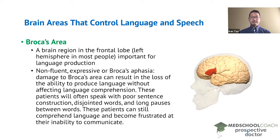In individuals that have damage to Broca's area, they may have what is called non-fluent expressive, or Broca's aphasia. Because they have damage to a brain region important for language production, these patients are unable to produce language that is comprehensible. When they try to speak, they often speak with poor sentence construction, disjointed words, and long pauses between words.